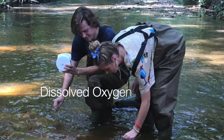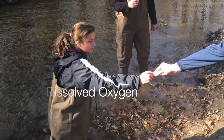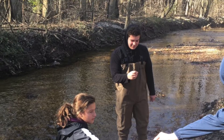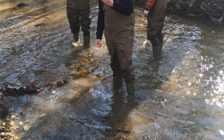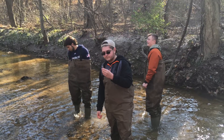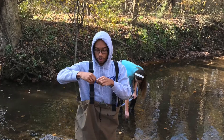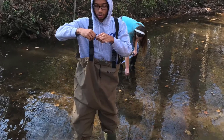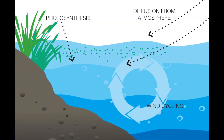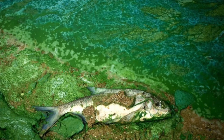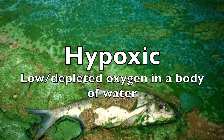Dissolved oxygen, or DO, is a measure of how much oxygen is dissolved in the water, or the amount of oxygen available to living aquatic organisms. It enters the stream mostly through the atmosphere and is circulated through moving water. Different organisms require different amounts of DO, and without it, hypoxic conditions arise, creating dead zones.